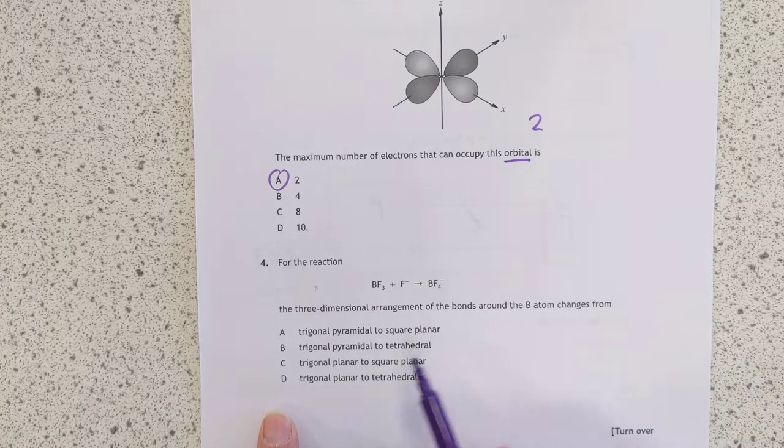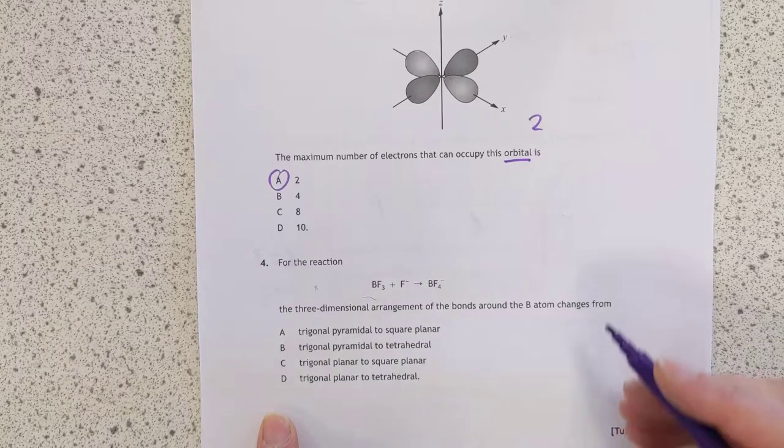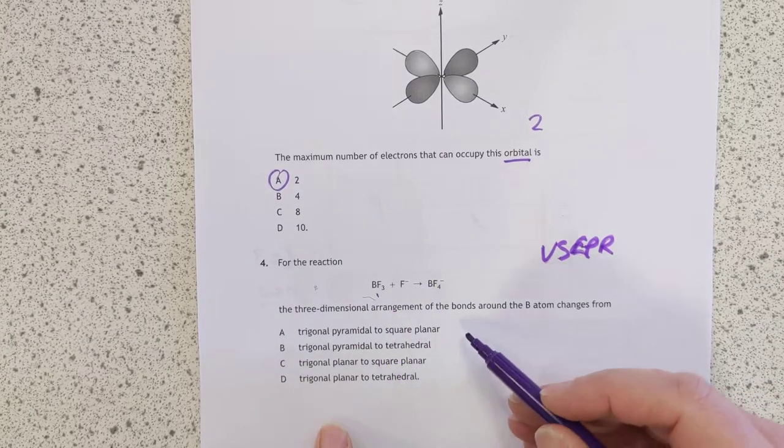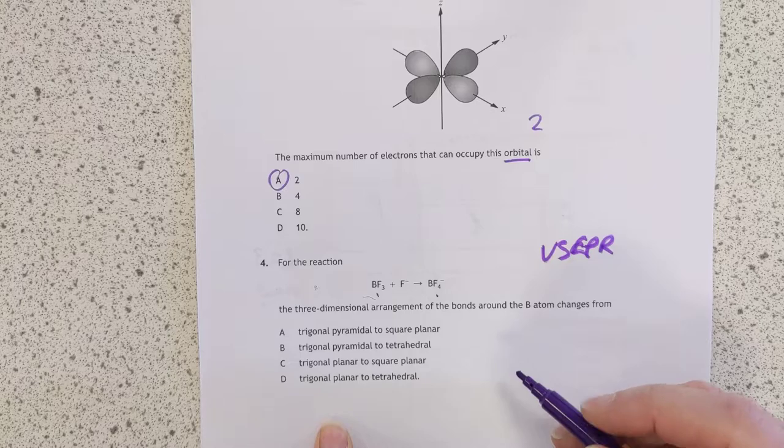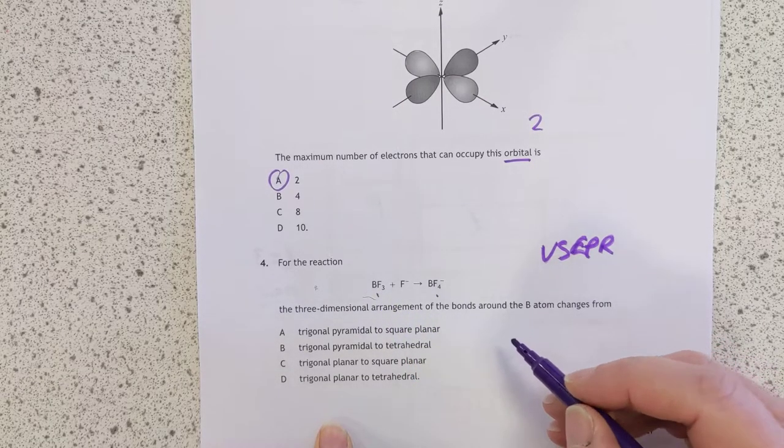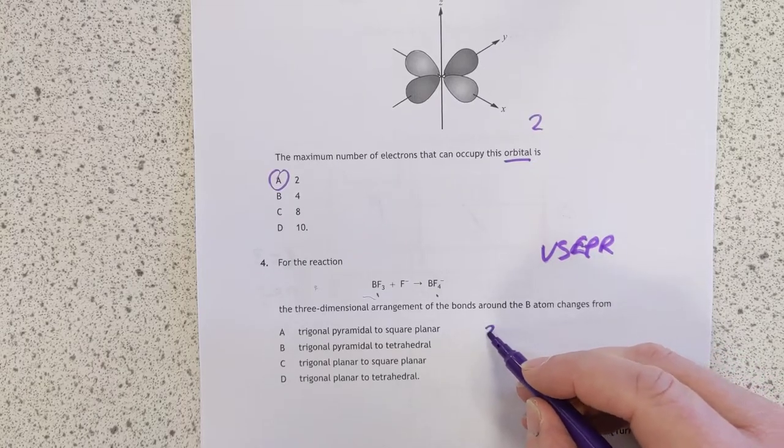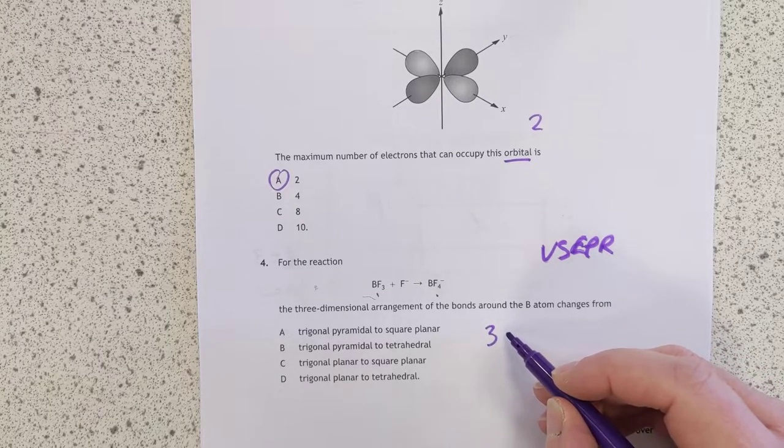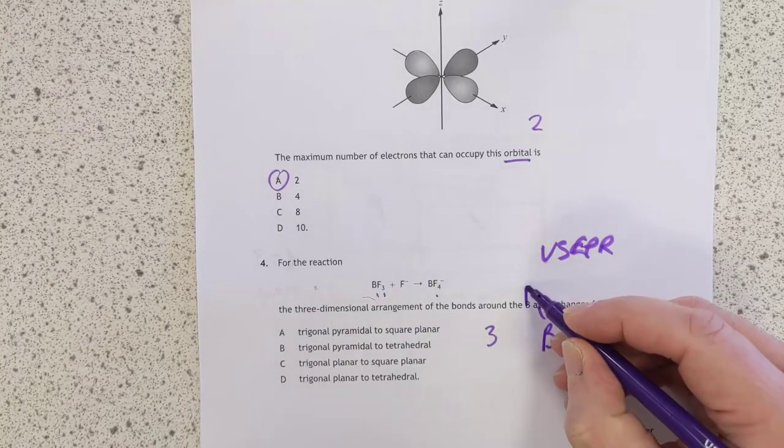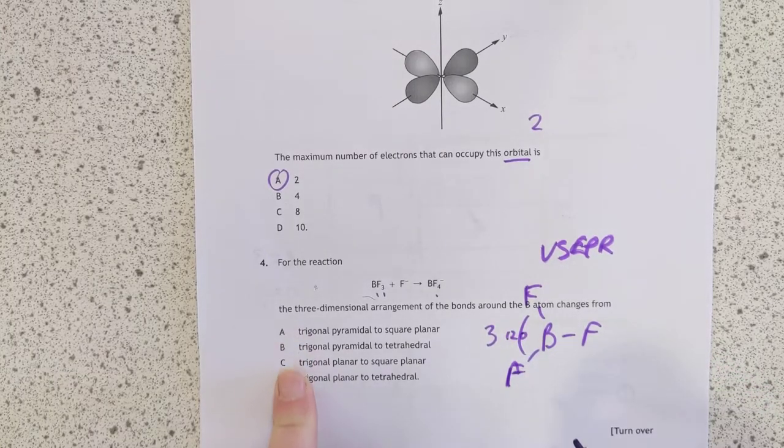For the reaction, BF3, the three-dimensional arrangement of the bonds around the boron atom changes. This is VSEPR theory. Right, so no shortcut for this, we're just going to have to work it out. B is in group three, so it has got three outer electrons, plus another three is six pairs in total, over two, sorry, six electrons in total over two, is there are three pairs, and all of them are involved in bonding, because there's three Fs, which means you're talking about a trigonal planar arrangement in the plane of the page with 120 degrees.